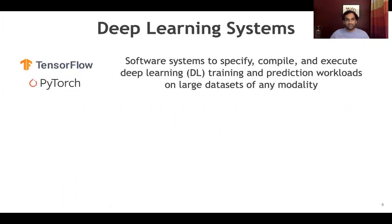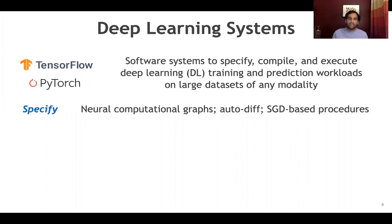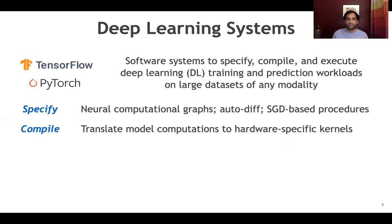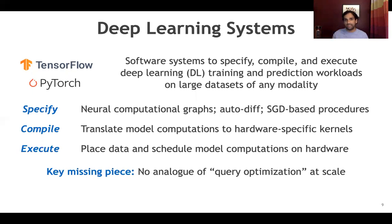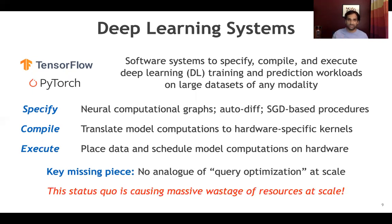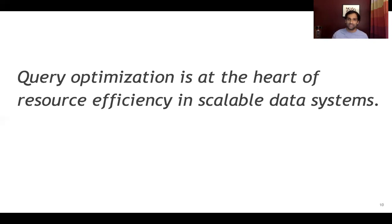This is where deep learning systems come in. They are software systems to specify, compile, and execute deep learning workloads on any form of data. They allow you to specify neural computational graphs, do automatic differentiation, and run stochastic gradient descent-based training. They compile those specifications to hardware-specific kernels and do some compiler optimizations like operator fusion, and they execute this on the hardware. Looking at this, we notice that a key missing piece — drawing an analogy to data systems — is there is no analog of query optimization at scale, and this is one of the reasons why these systems are causing massive wastage of resources on large-scale data, for large models and so on. Query optimization is at the heart of resource efficiency in scalable data systems.